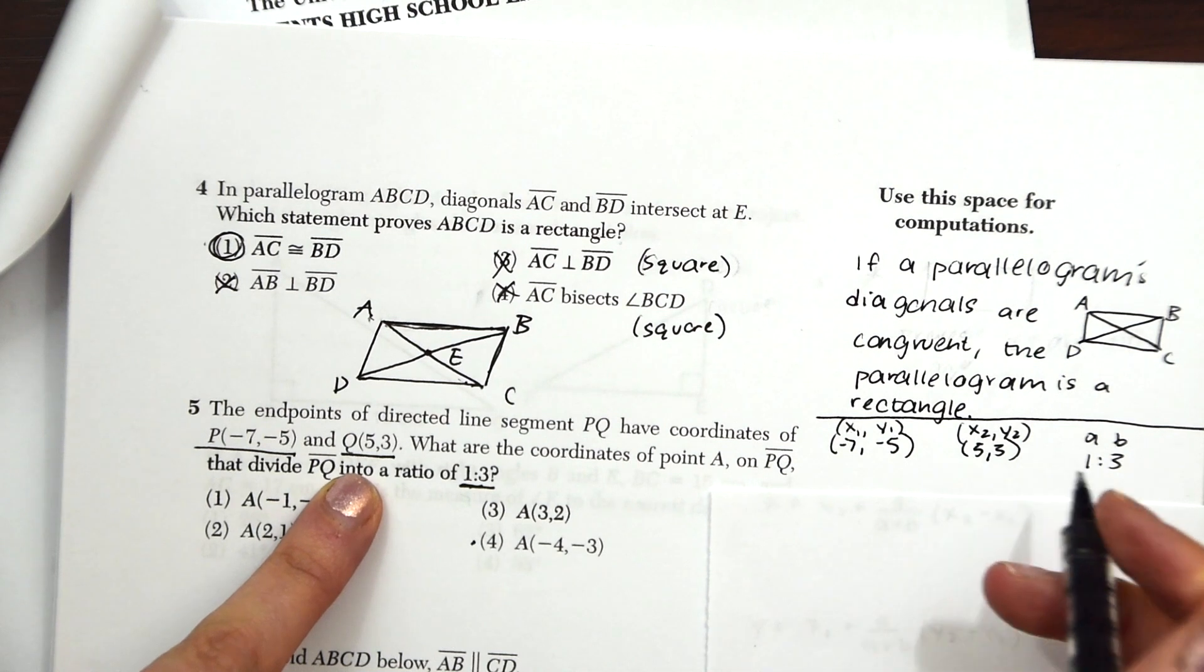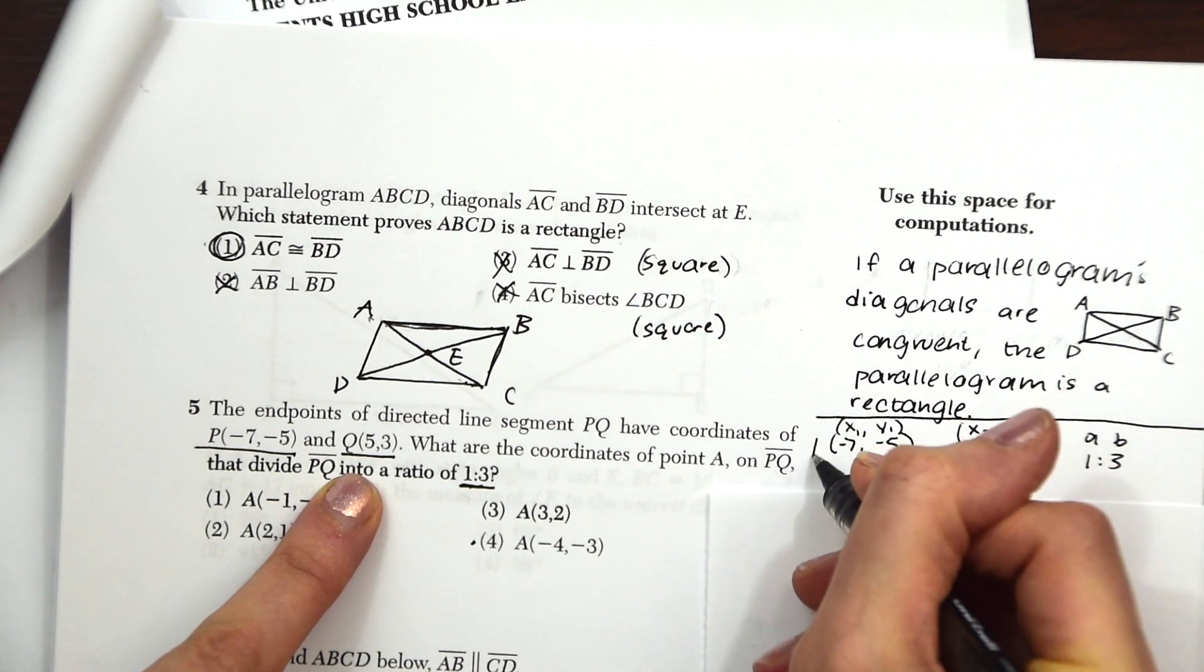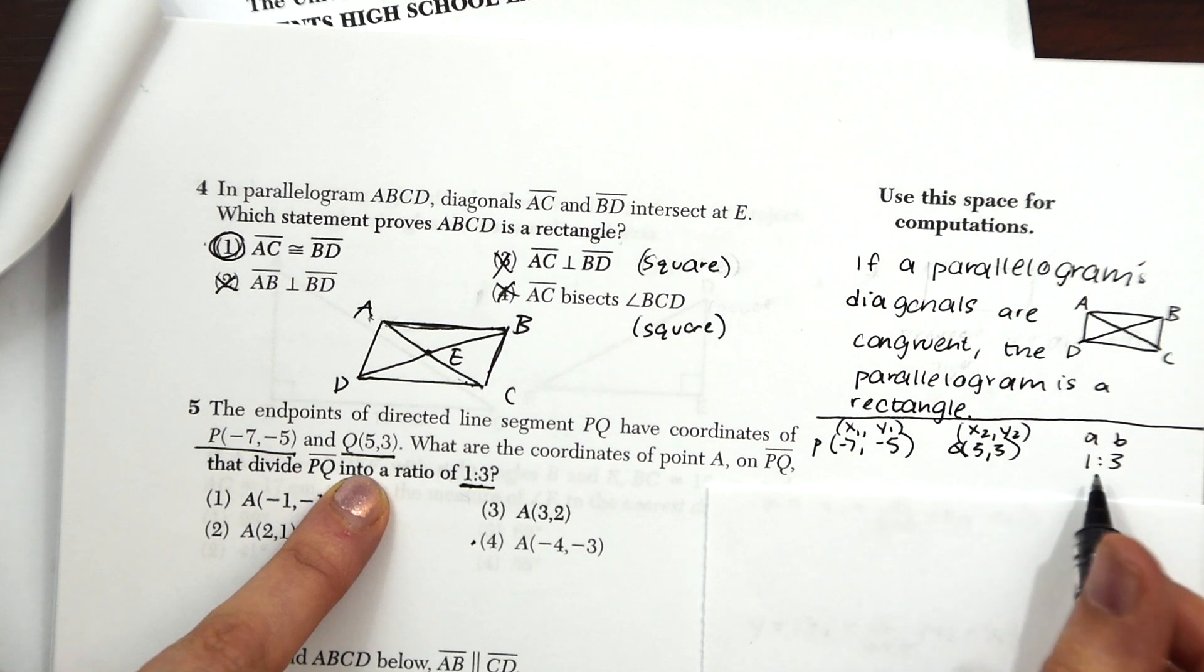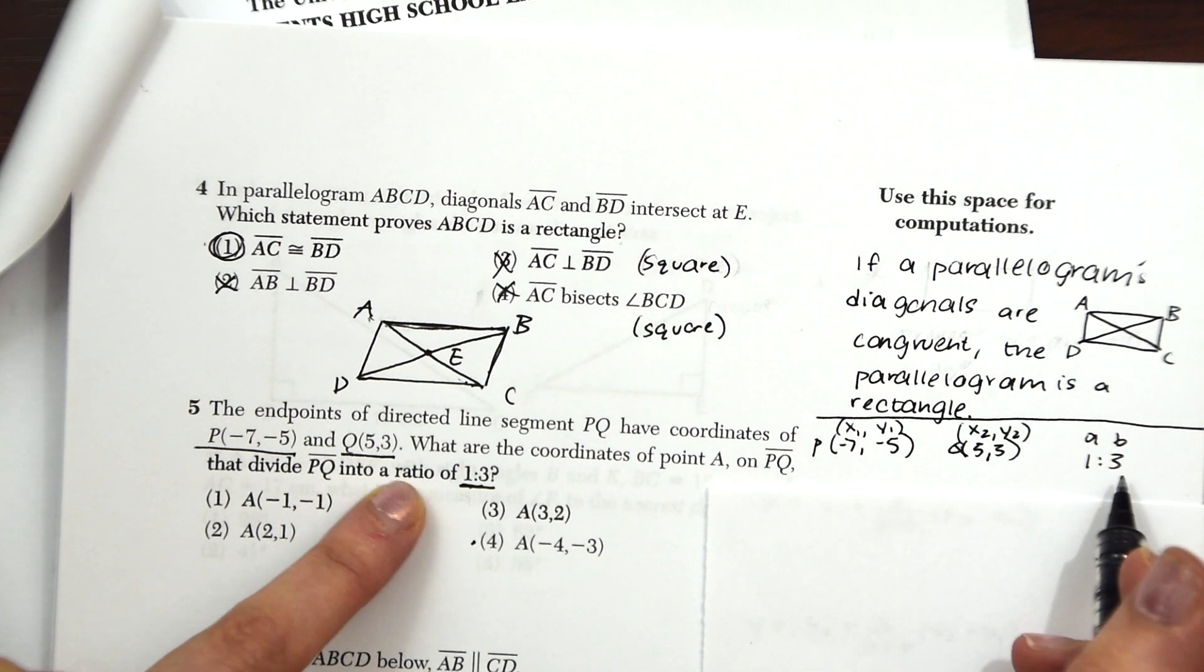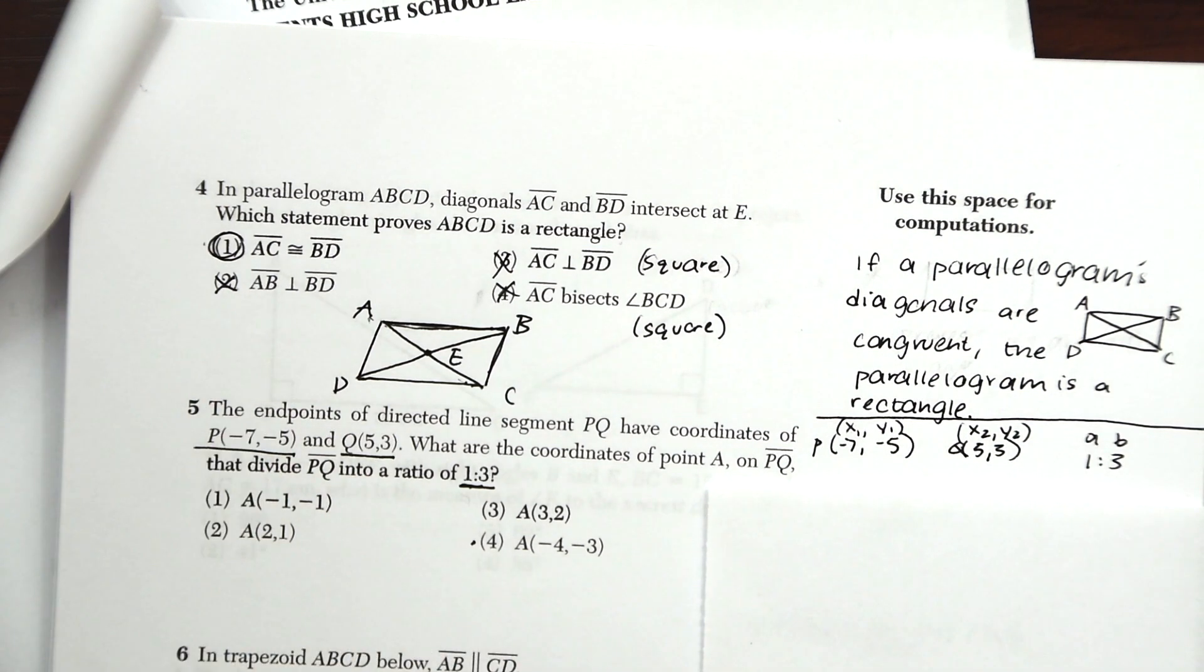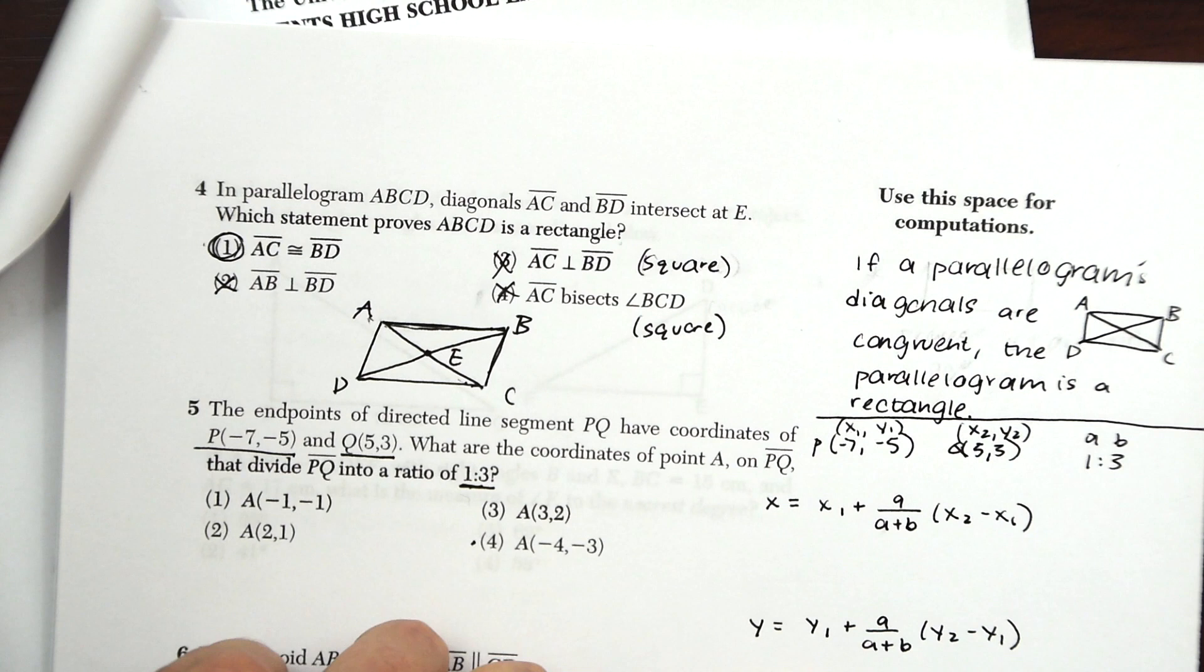And then the second coordinate Q, this is P, this is Q, is 5, 3. So that's x2, y2, and then our ratio A will be represented by AB. So here are our formulas. We're going to be finding a point, so we need a formula for the x coordinate and a formula for the y coordinate.